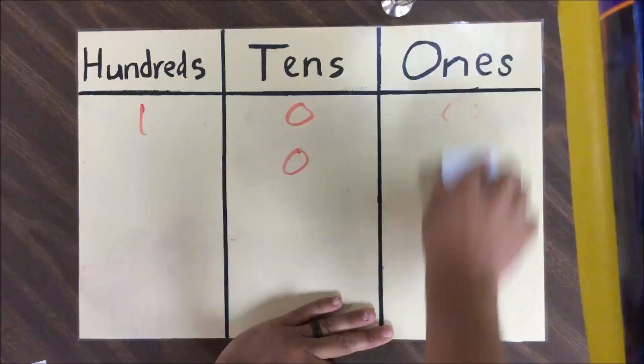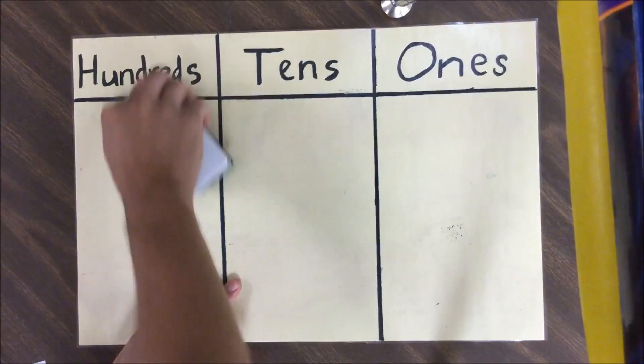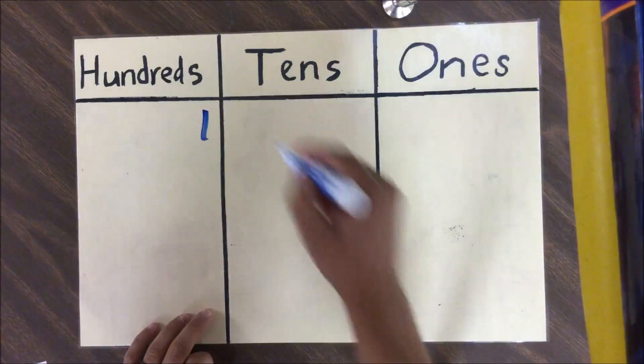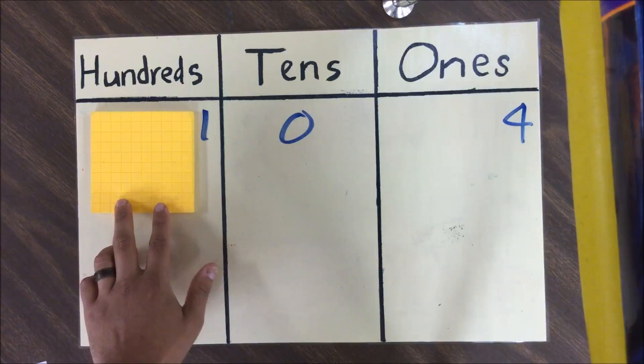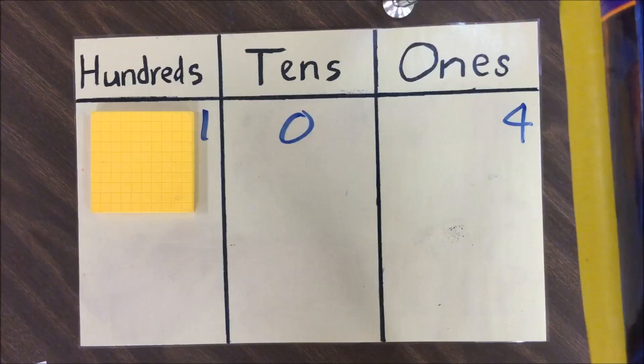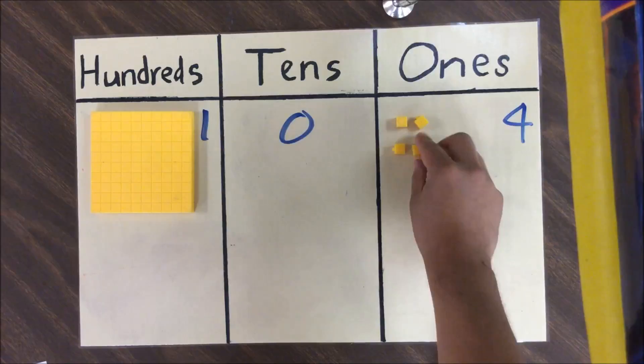Going back to our original number, I'm going to show it in blue: one in the hundreds place, zero in the tens place, and four in the ones place. Now I'm going to represent this using base-10 blocks — one hundreds piece for the hundreds place, zero tens rods for the tens place, and four individual cube pieces for the ones place.